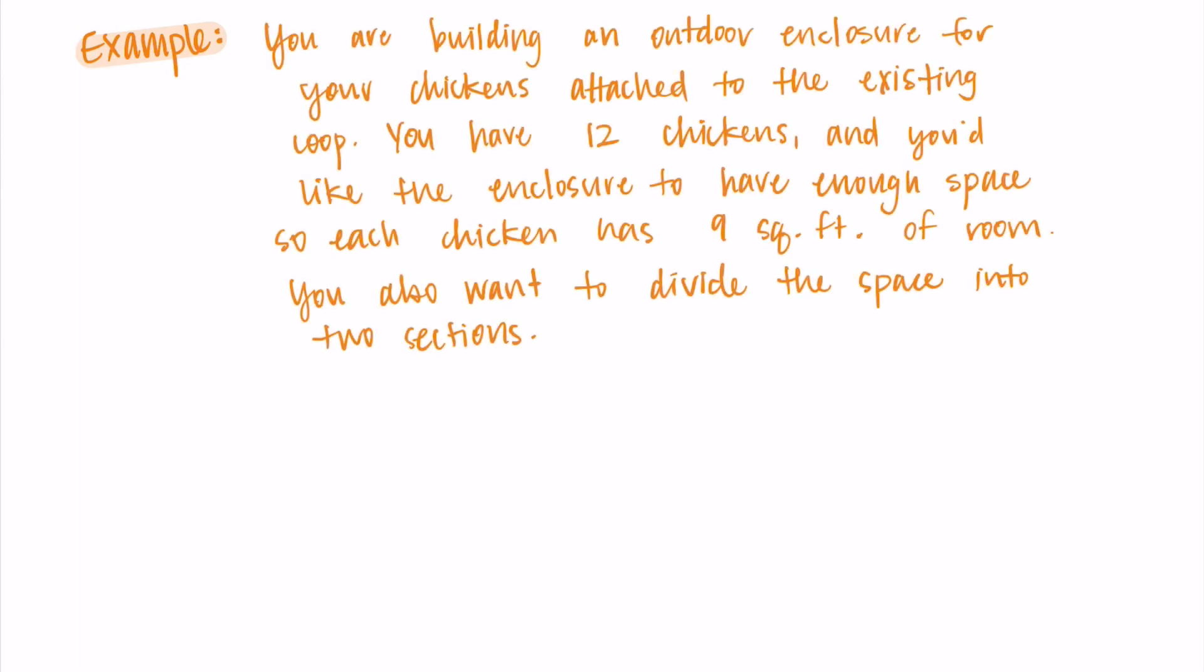For our first example, let's say you are building an outdoor enclosure for your chickens and it's attached to the existing coop. You have 12 chickens and you'd like the enclosure to have enough space so each chicken has nine square feet of room. You also want to divide the space into two sections.